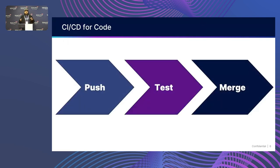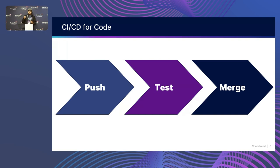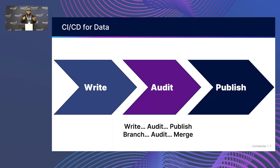In the software development paradigm, we push code, all those unit and end-to-end tests get automatically triggered, and if successful, that code gets merged into the code base — push, test, merge. How would that look in the data world? You write the data, you want that data to be audited but not published until the audit is successful — write, audit, publish. In Git-like semantics, that means branch and ingest data on a branch, audit the data on that branch, and then merge that branch.